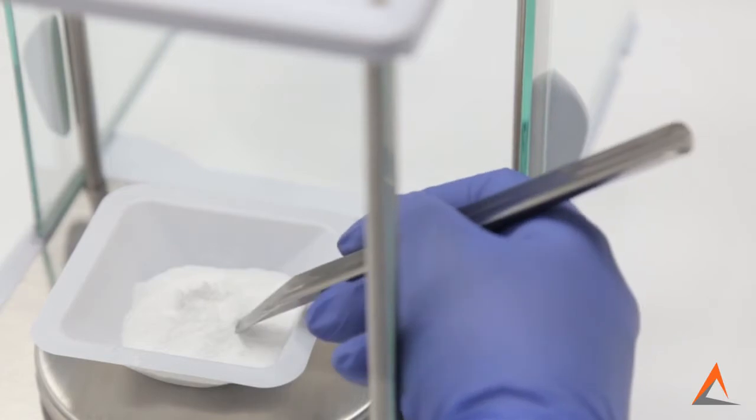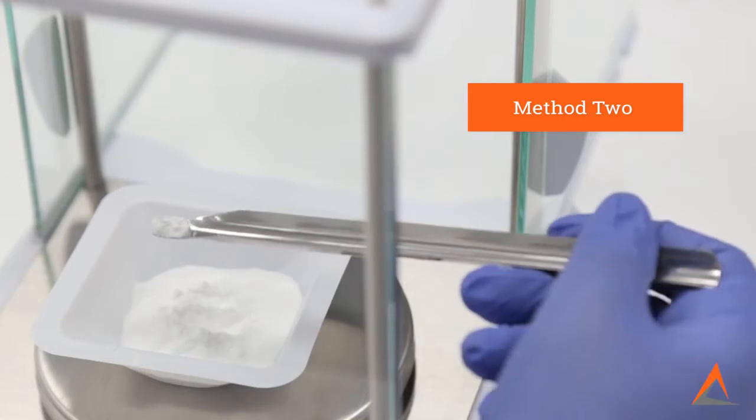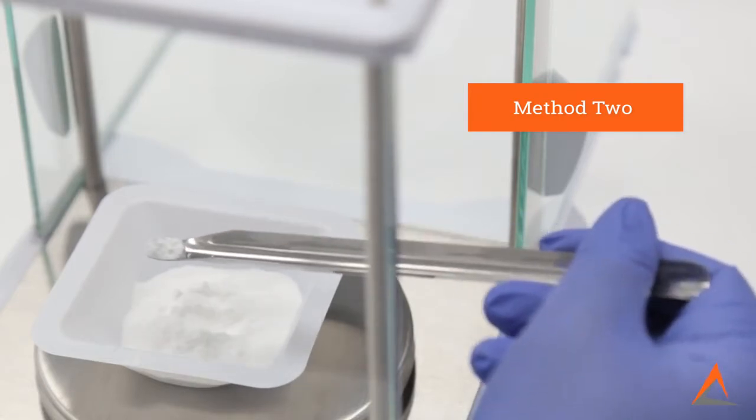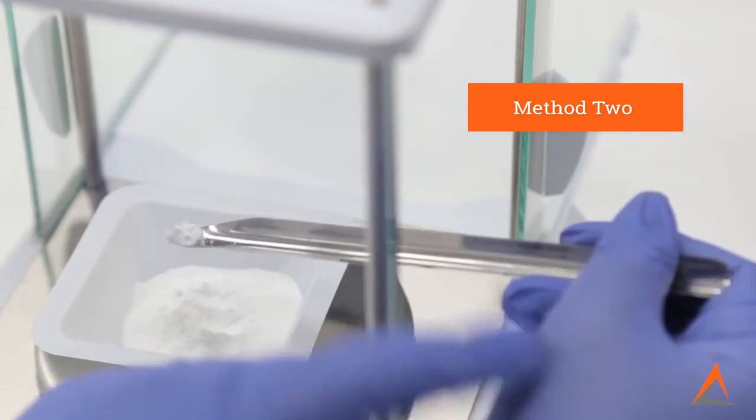Lastly, if you feel more comfortable holding the spatula at the far end, you can use your second hand to lightly tap the hand holding the spatula. Once again, this allows for more controlled movement so that you can slowly add powder into your weigh boat.